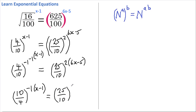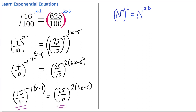Now since the bases are the same — both equal 2.5 — all we need to do is set the powers equal to each other. So the left side becomes negative x plus 1.